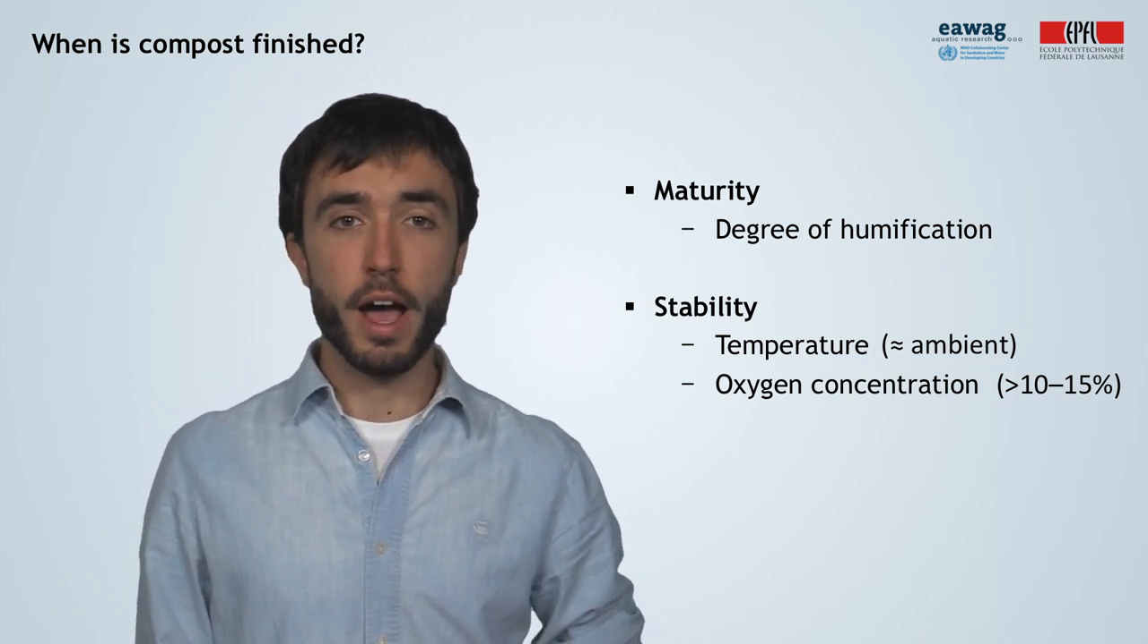Stability, on the other hand, is indicated by temperature and oxygen consumption. Measuring compost stability is normally easier than measuring maturity. The most clear indication of a stable or finished compost pile is when the temperature at the center returns to near ambient, and when the oxygen concentrations in the air cavities inside the pile remain greater than 10% for several days.